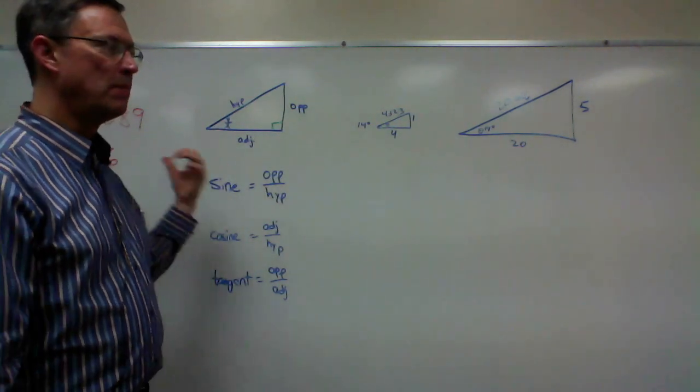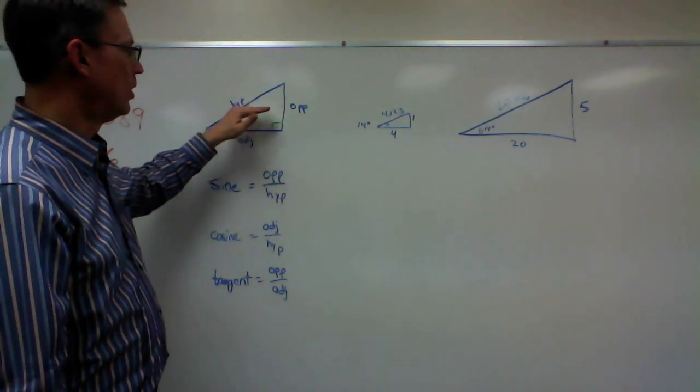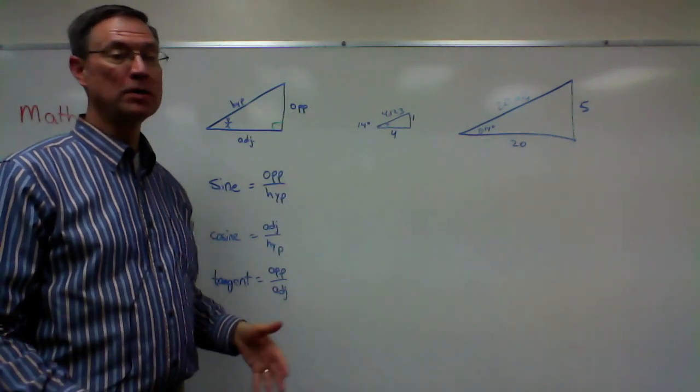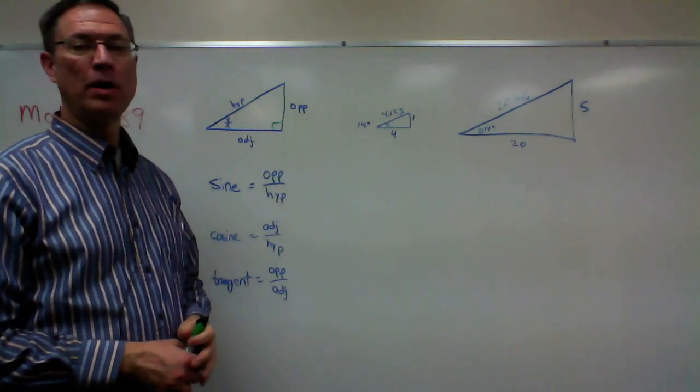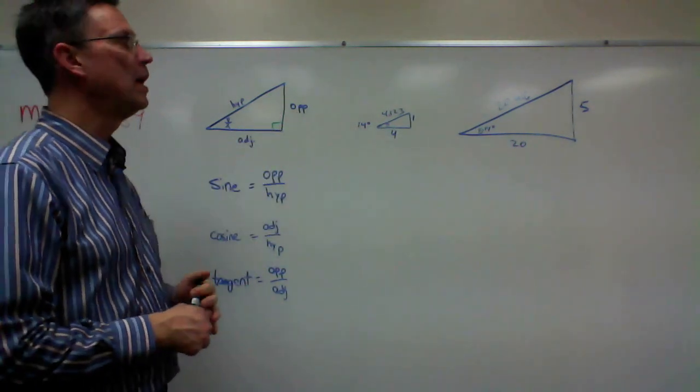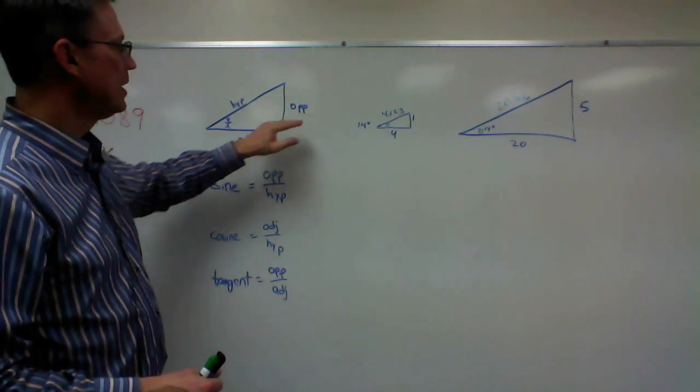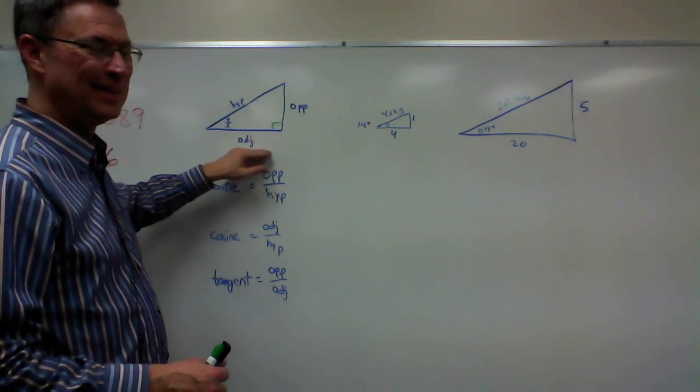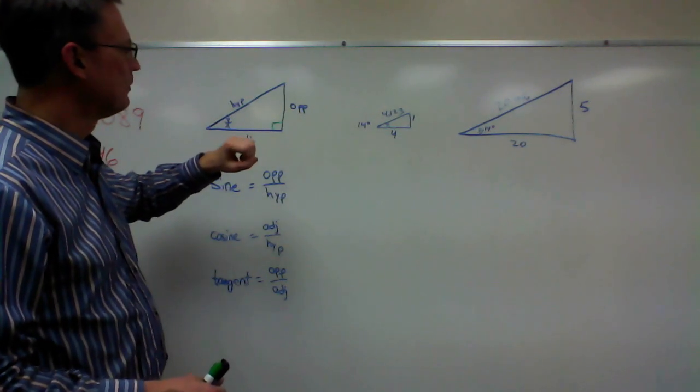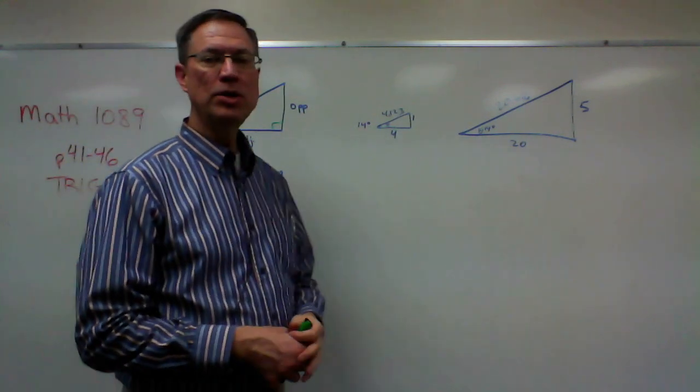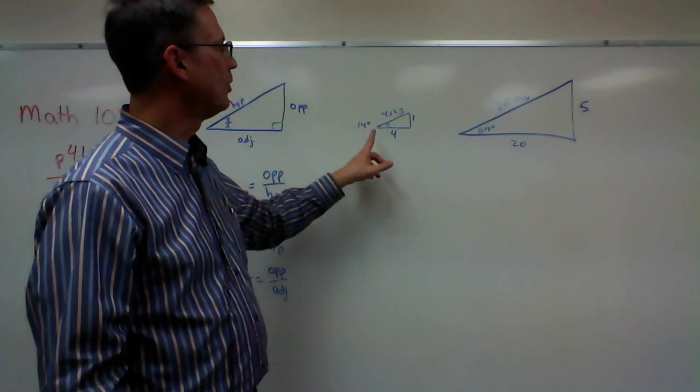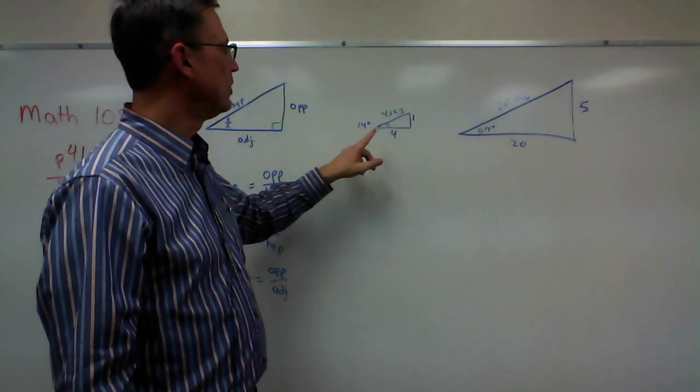Now, in this particular math pace, they try to be consistent in always drawing the right angles to look like this. But in other textbooks, and maybe later on in other problems, they might turn the triangle around or have it situated in a different way. And so, these are not always right and bottom. It's always relative to the angle. Now, let's talk about something, and that is that the ratio of the sides is always the same for a given degree angle. Let me illustrate this.